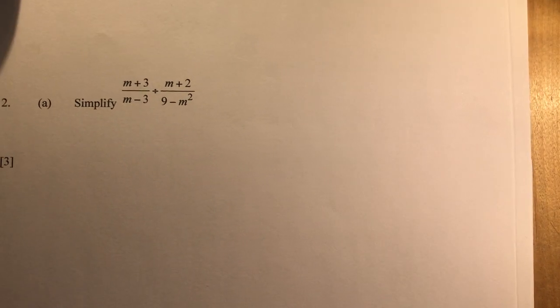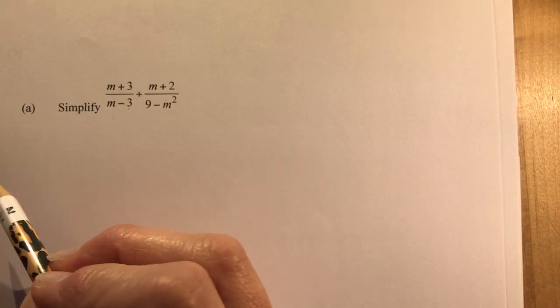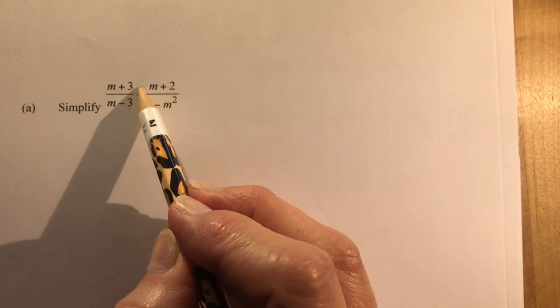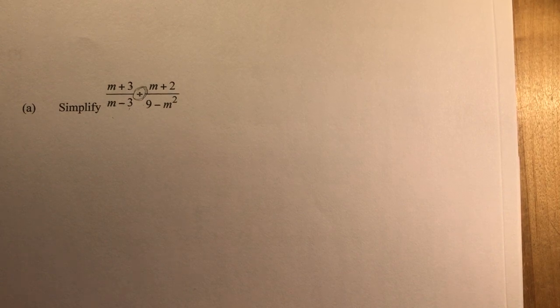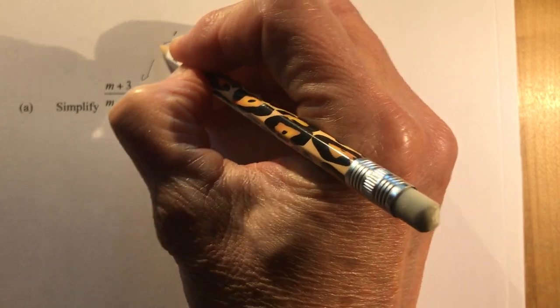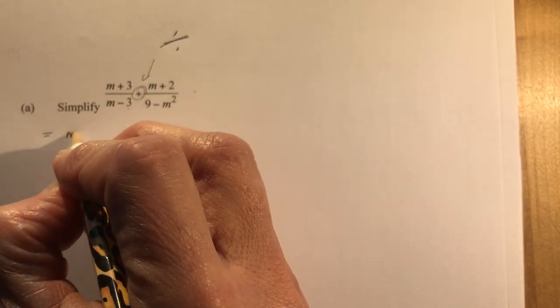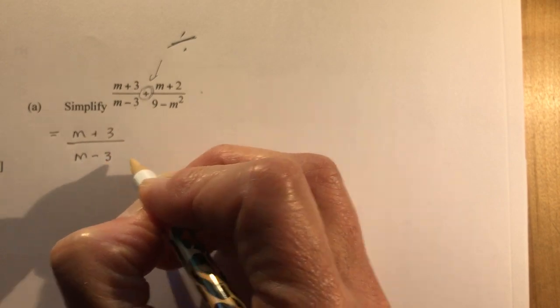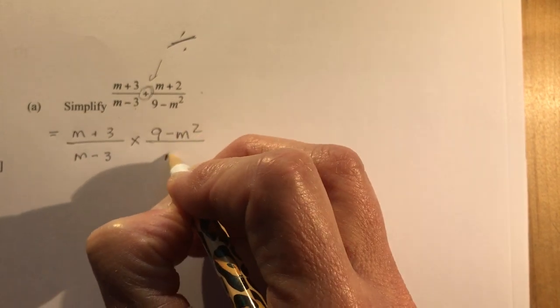So simplify N plus 3 over N minus 3. It's worth 3 marks, and I'm dividing. Make sure you know what you're doing before you start. Is that plus or is it dividing? It's a divide. So I want to simplify. If I'm going to divide fractions, I need to invert and multiply. So I'm going to flip this around, put this on the top and this on the bottom.